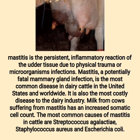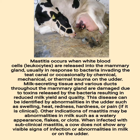The most common causes of mastitis in cattle are Streptococcus agalactiae, Staphylococcus aureus, and Escherichia coli. Mastitis occurs when white blood cells (leukocytes) are released into the mammary gland, usually in response to bacteria invading the teat canal, or occasionally by chemical, mechanical, or thermal trauma on the udder. Milk-secreting tissue and various ducts throughout the mammary gland are damaged due to toxins released by the bacteria, resulting in reduced milk yield and quality.